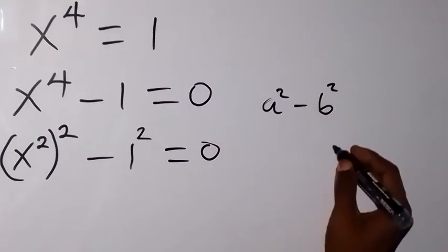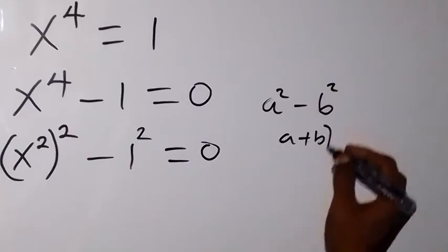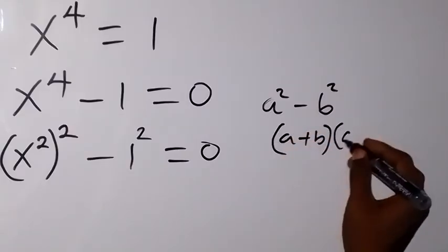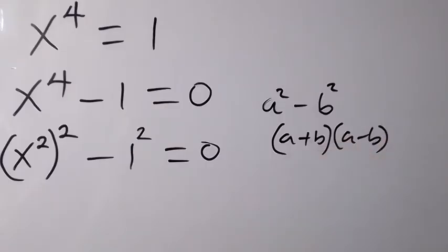So this will be equal to a plus b multiplied by a minus b. So this is difference of 2 squares.